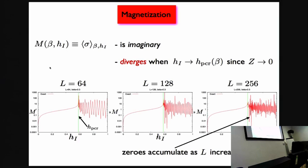You can look at the magnetization, the expectation value of the spin itself. When the external field is imaginary, the magnetization also is imaginary. As a function of the external field, it diverges when you reach this pseudo-critical value. Why? Because the denominator in this expectation value is the partition function and the partition function vanishes, so the ratio diverges. This is what you obtain analytically on systems of increasing size - the imaginary magnetization as a function of the external imaginary field. It's on the log scale because it increases dramatically and diverges here when you reach the first zero of the partition function, the edge singularity. You see the accumulation of zeros as you increase the system size; the wiggles become denser and denser.